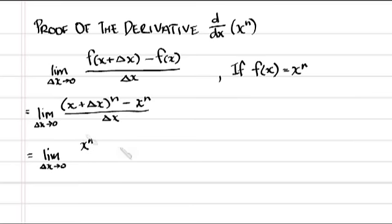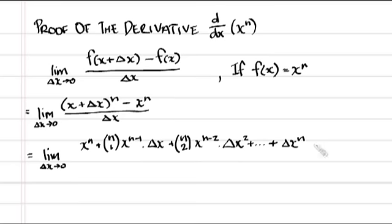Then this expansion becomes x to the power n plus n choose 1 times x to the n minus 1 by delta x plus n choose 2 by x to the n minus 2 by delta x squared, and so on and so on, until we come to the last term of that expansion, which is just delta x to the power n. The rest of the numerator we're left with take away x to the n, and in the denominator we still have delta x.